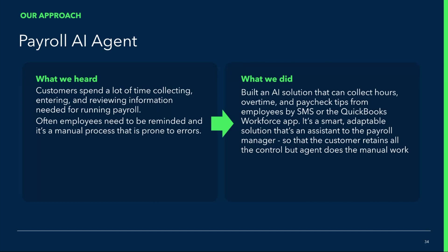This process is very manual today, so it's prone to errors and could take long. Based on this, what we've done is introduced an AI solution that can collect hours, overtime hours, paycheck tips, reimbursements, and time off, all via SMS or the workforce app. It's a smart and intelligent system which reaches out to your employees directly on your behalf, and it has the ability to detect anomalies in data that's submitted. It can also make sure that you as the employer are always in the loop and have final control over what data makes its way into the payroll draft before payroll is processed.